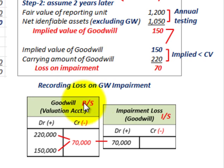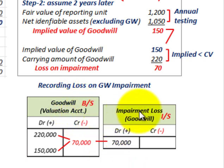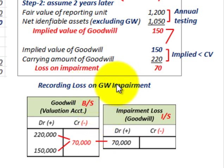To record the loss: goodwill sits on the balance sheet as a valuation account, originally recorded as a debit of $220,000. We credit the goodwill account for $70,000, leaving a balance of $150,000. We then debit the impairment loss account on the income statement for $70,000, recognizing the loss on impairment of goodwill.